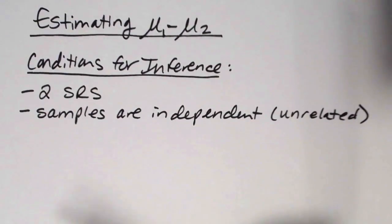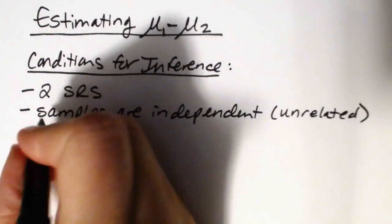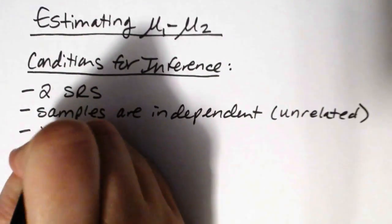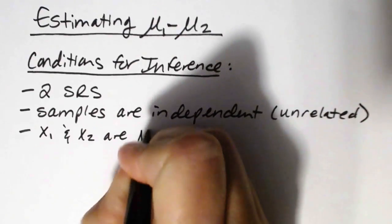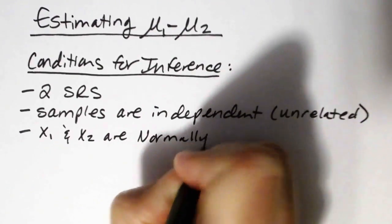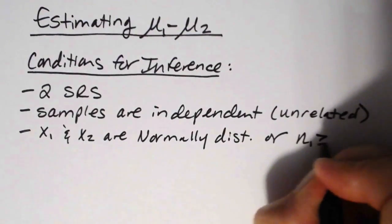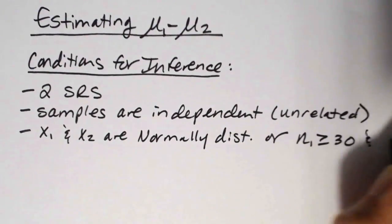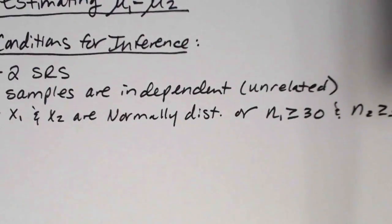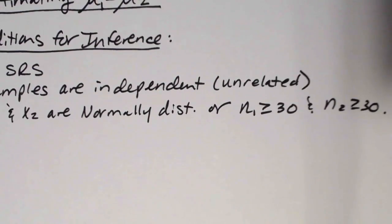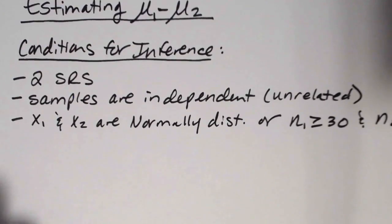We need two simple random samples and the samples need to be independent. We also need to know that X1 and X2 are normally distributed, or we need the sample sizes to be greater than or equal to 30 for both groups — n1 ≥ 30 and n2 ≥ 30. This goes back to the central limit theorem.